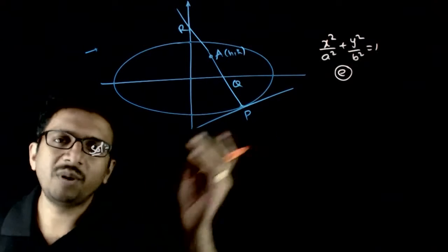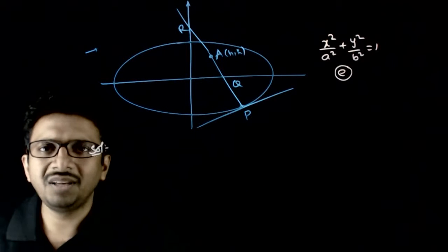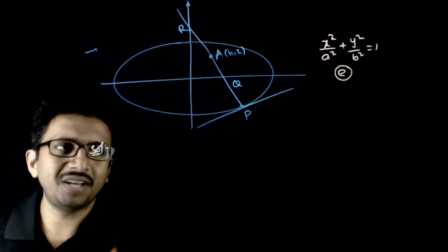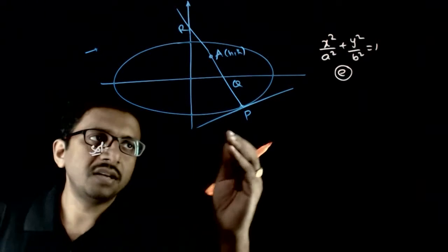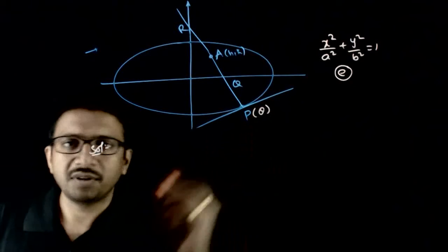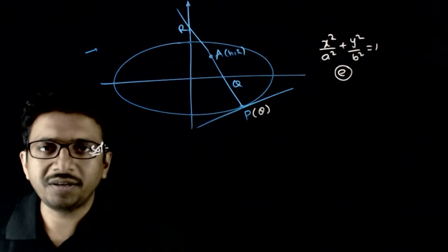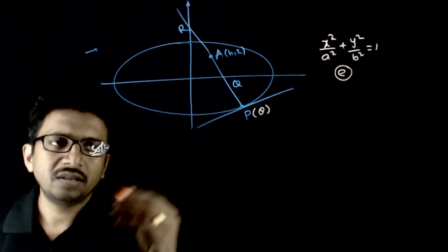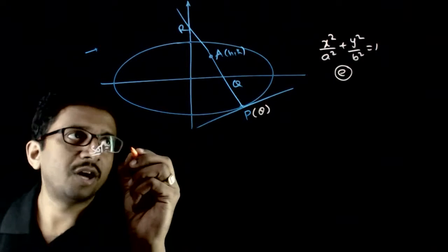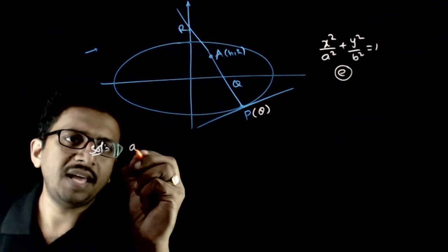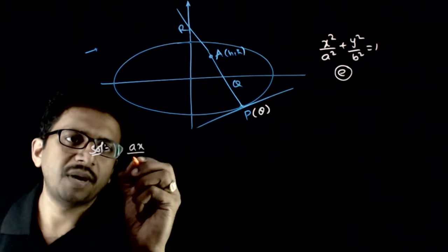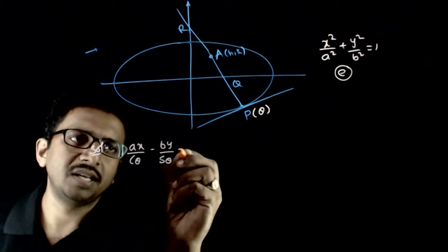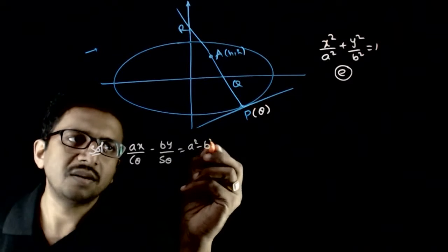Let us start with a variable point on the ellipse. We formalize the variable point in terms of theta. Let P be the point (a cosθ, b sinθ). The equation of normal at point P is: ax/cosθ minus by/sinθ is equal to a² minus b².